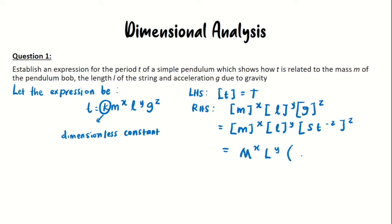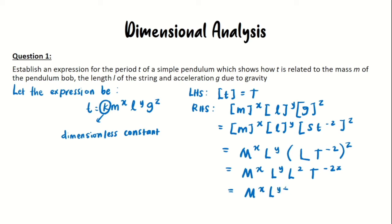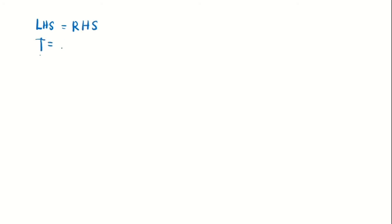So the expression can be written as M to the power of x, L to the power of y, and L times T to the power of negative 2, all raised to the power of z. Simplifying, we get M to the power of x, L to the power of y plus z, and T to the power of negative 2z. We then equate both left-hand side and right-hand side: T equals M to the power of x, L to the power of y plus z, and T to the power of negative 2z.